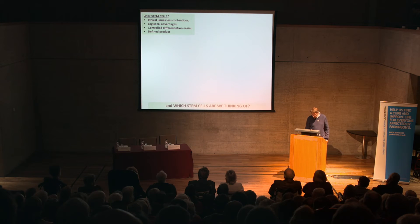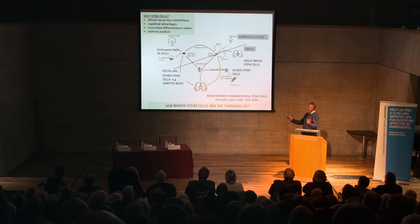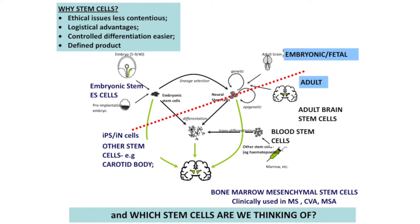That is why stem cells are so useful logistically. The question is which stem cells? There are many different types — we all have stem cells in us; our blood is replaced every 120 days by stem cells. But I would say there are essentially only two types of stem cells that are going to go to clinic in the foreseeable future. If you read about any other stem cells for Parkinson's, you should ignore it, because there is no evidence that any of those are going to work.